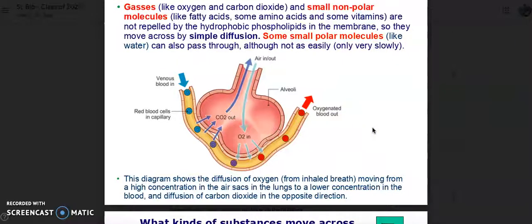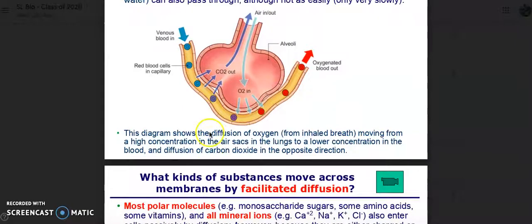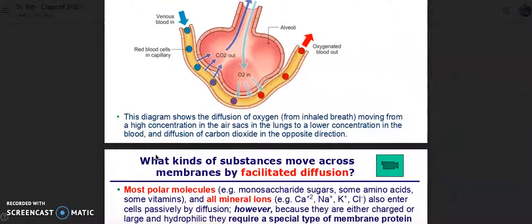Some small polar molecules like water can also pass through, although not easily, only very slowly. This diagram shows the diffusion of oxygen from inhaled breath moving from a high concentration in the sacs of the air to a lower concentration in the blood and a diffusion of carbon dioxide in the opposite direction.